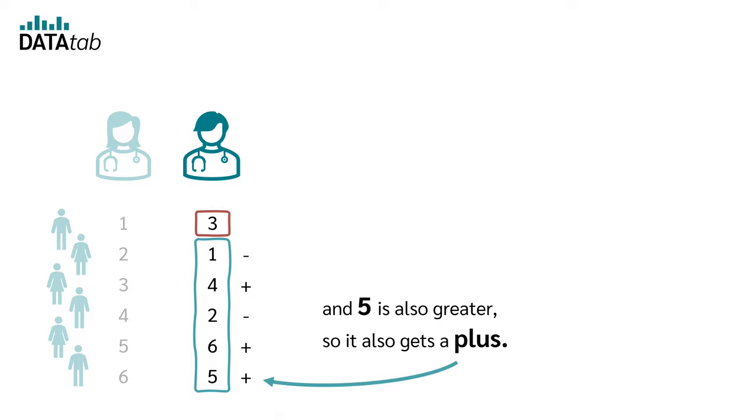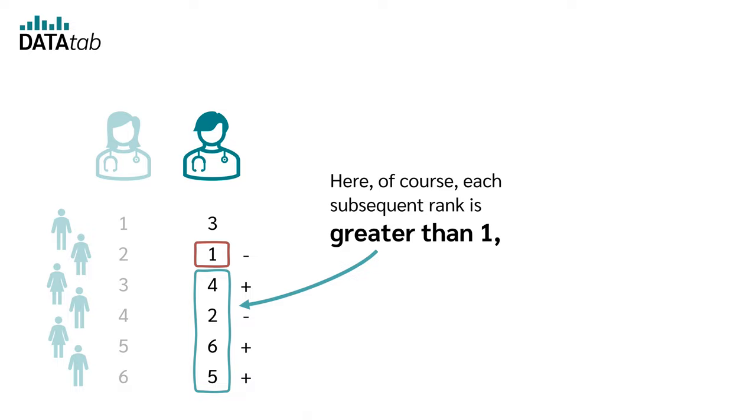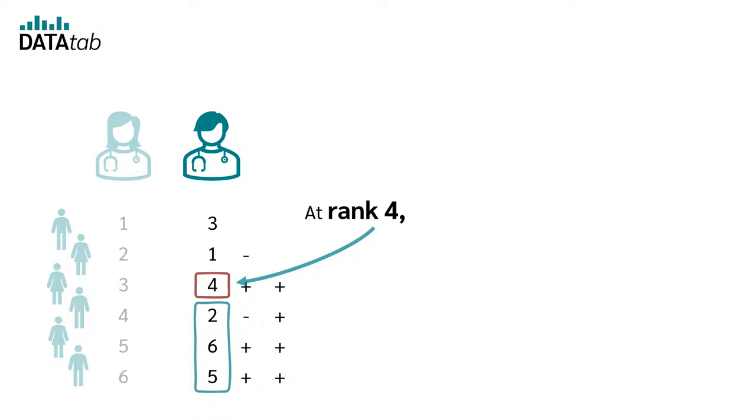Now we do the same for one. Here of course each subsequent rank is greater than one, so we have a plus everywhere. At rank four, two is smaller and six and five are greater.